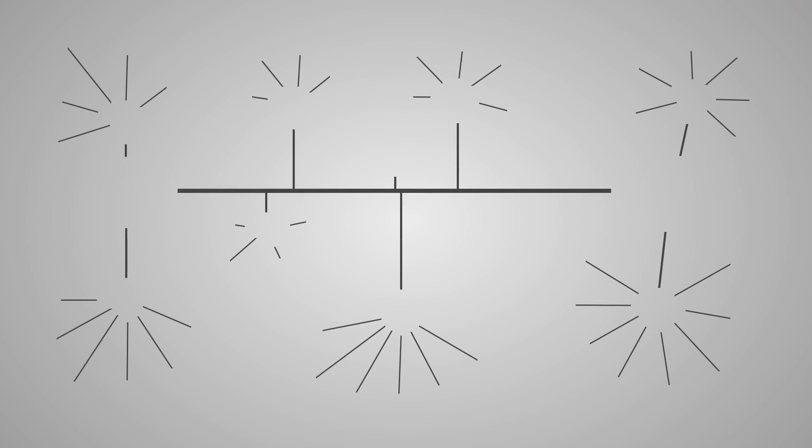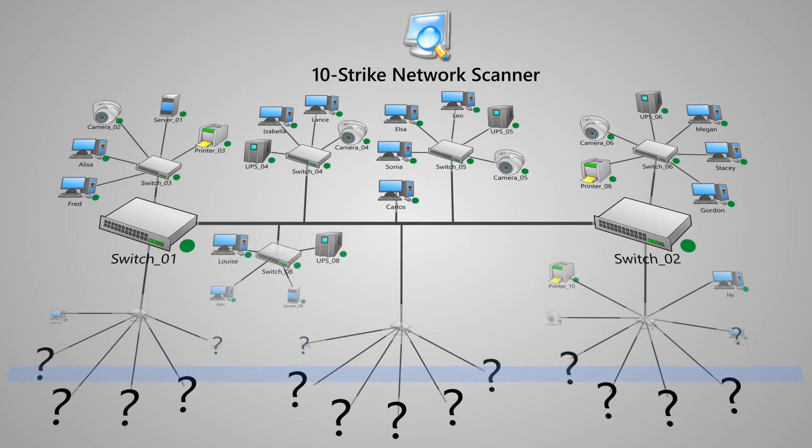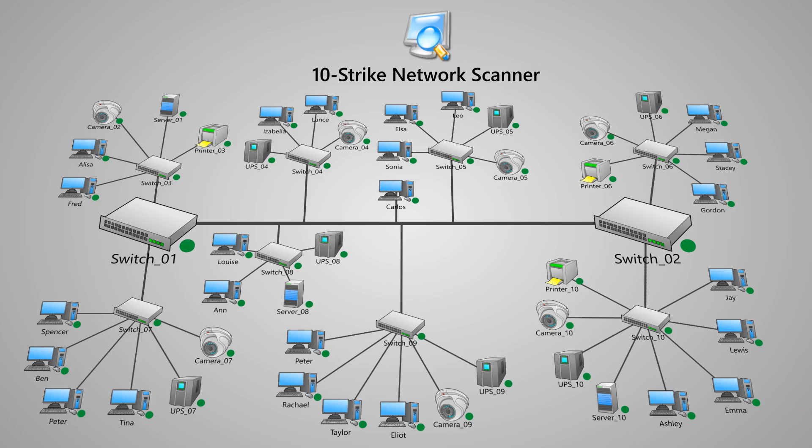Sometimes there is a need to scan the network for hosts, find connected devices, and determine their MAC or IP addresses. This problem can be solved using the free program 10-Strike Network Scanner. It will scan the network and find active hosts — computers, servers, phones, tablets, TVs, IP cameras, and other network devices. It also detects the device MAC and IP addresses so you can easily open the device's web interface and configure it.